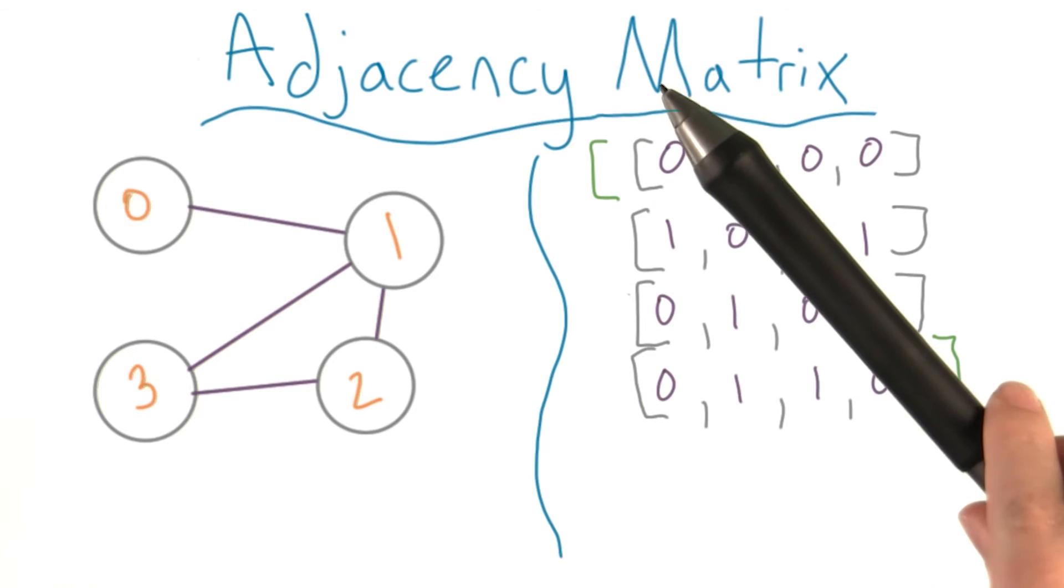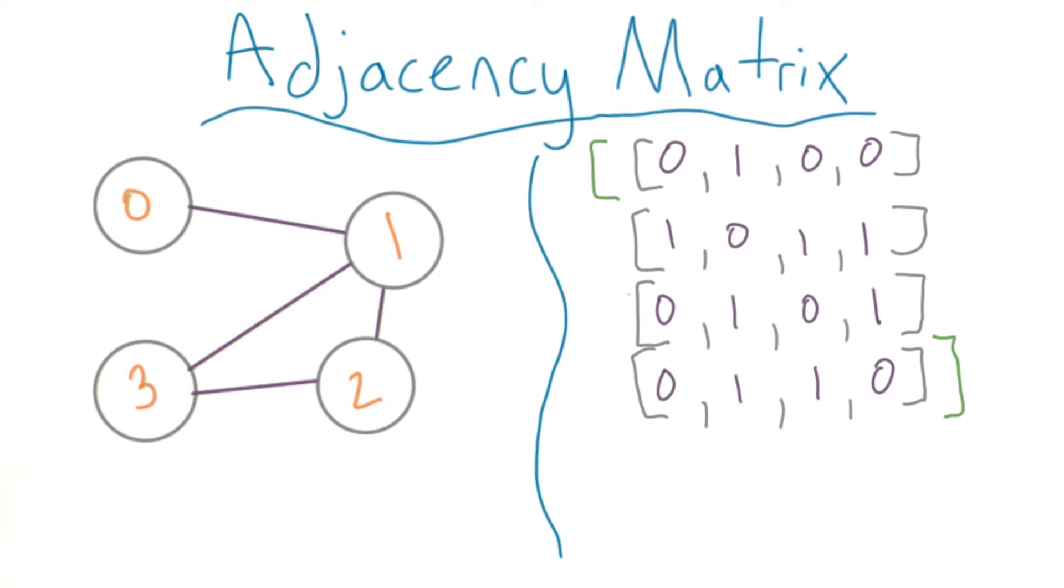Lastly, an adjacency matrix can be used. In computer science, a matrix is essentially a 2D array, but the lists inside are all the same length.